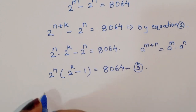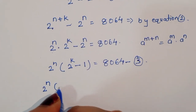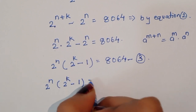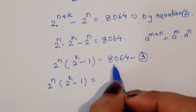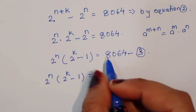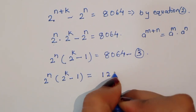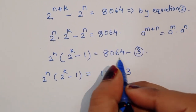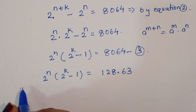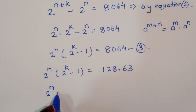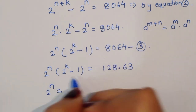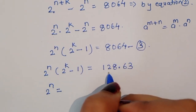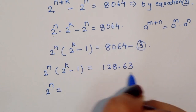Now, 2 power n times (2 power k minus 1) equals 8064. The factors of 8064 can be written as 128 times 63. Comparing, we get 2 power n equals 128 and 2 power k minus 1 equals 63.